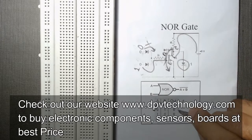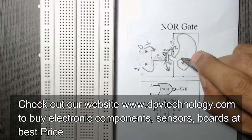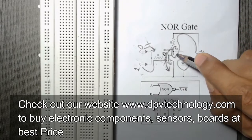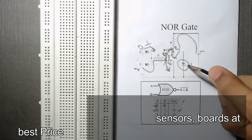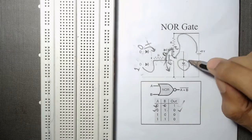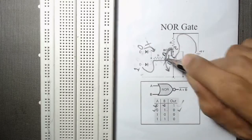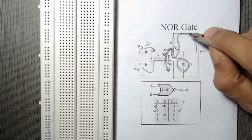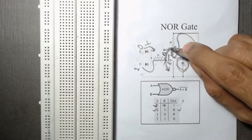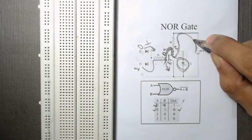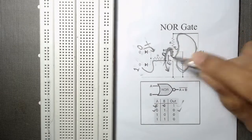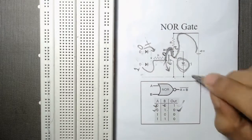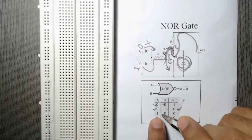The LED will not be turned on and will be OFF, giving us zero at the output. The reason the current flows through the transistor rather than the LED is that the transistor has less resistance than the internal resistance of the LED — current always flows through the path where resistance is low.